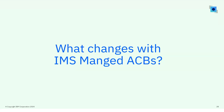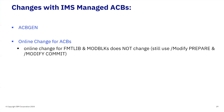So I've introduced you to the components of an IMS managed ACB environment. Let's say you implement IMS managed ACBs — what's impacted? What changes? Here's the one big change: ACB gen changes, and online change for ACBs changes. Online change for format library and mod blocks does not change — you would still use slash modify prepare and slash modify commit for those. But online change for ACBs will change once you implement IMS managed ACBs.